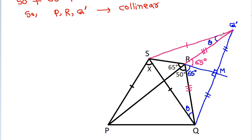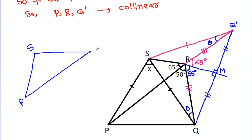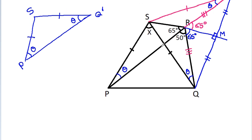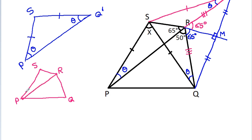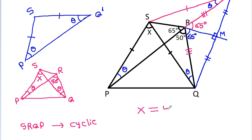In triangle SPQ', since SP equals SQ', these two base angles will be equal, so this angle will be theta. Now in quadrilateral S, R, Q', P, this angle is theta and this angle is theta, so S, R, Q', P will be cyclic. Therefore this angle is x and this angle is 50 degrees, so x will be equal to 50 degrees.